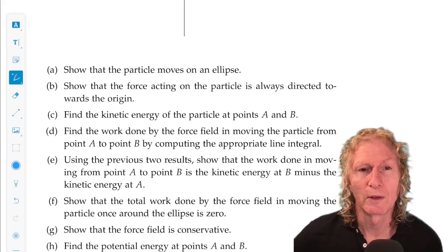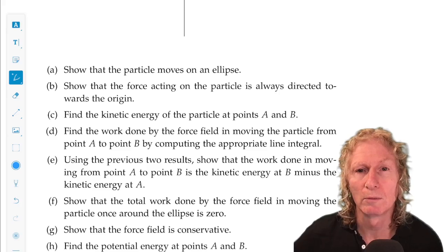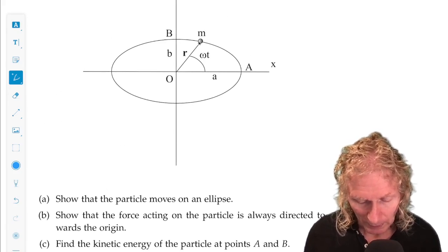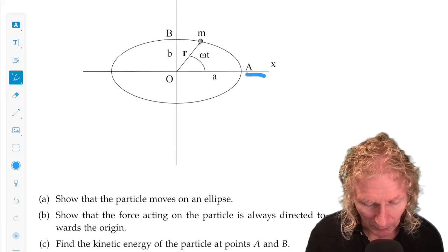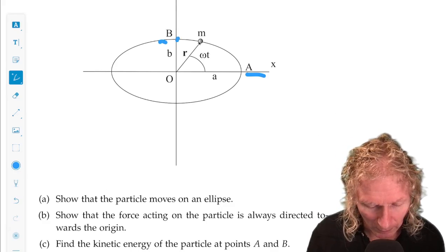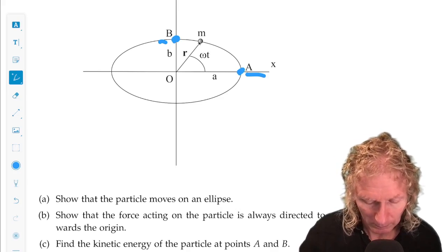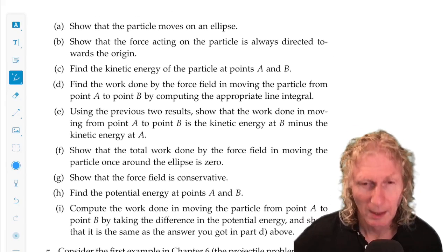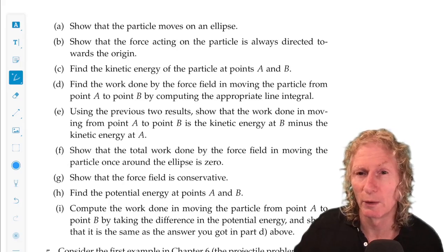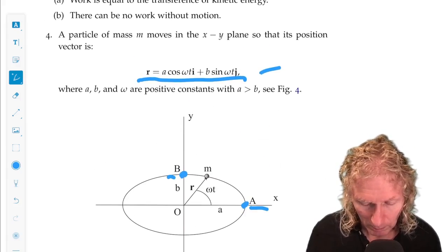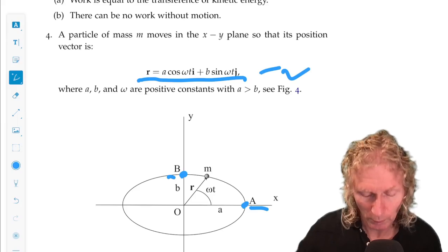Now we get into work. Part C, find the kinetic energy of the particle at points A and B. A is at the end of the semi-major axis, and B is at the end of the semi-minor axis. And you should be able to identify those points from the parametric relationship for the motion.